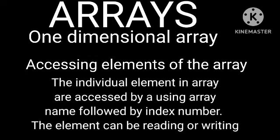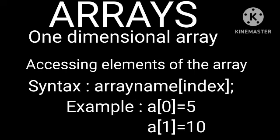The individual elements in an array are accessed by using the array name followed by the index number. Elements are accessed for reading or writing. The syntax is: array_name[index]. For example, a[0] = 5, a[1] = 10.